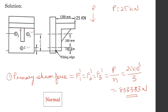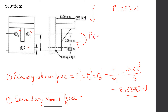In addition to the primary shear force, there is a secondary shear force. This secondary shear force arises because the applied load of 25 kN also causes a moment equal to P × e — that is, 25 kN × 1200 mm eccentricity. This is the moment that causes the bracket to tilt.